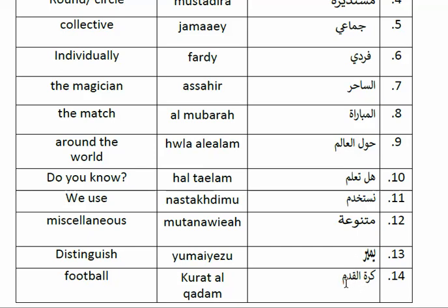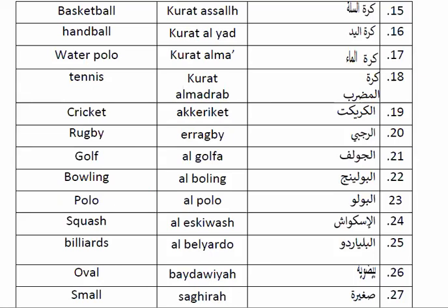Kuratalkadam means football. Next is basketball — for basketball, we call it Kuratalsalla. Handball is Kuratalyaddi. Kuratalsalla also refers to water polo — just like volleyball but played in the water. For tennis, it is Kuratalsalla Madhrab, and sometimes they also call it Tins. So tennis is known as Tins or Kuratalsalla Madhrab.